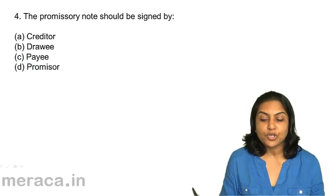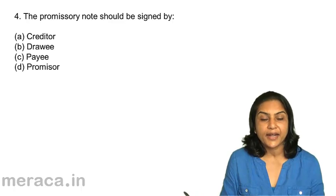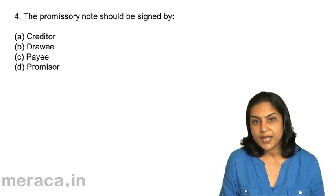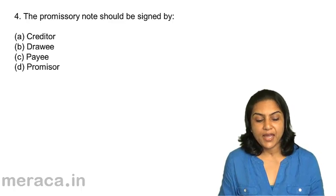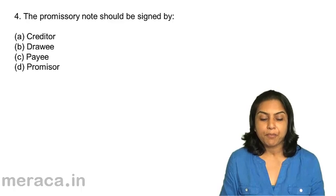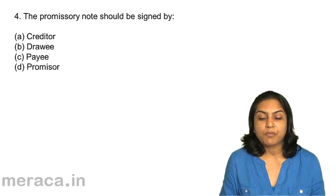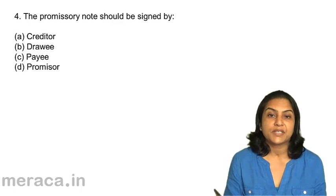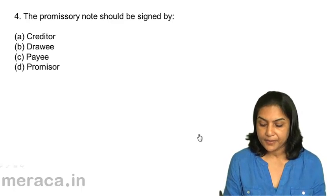Next question. The promissory note should be signed by: A. Creditor, B. Drawee, C. Payee, D. Promissor.